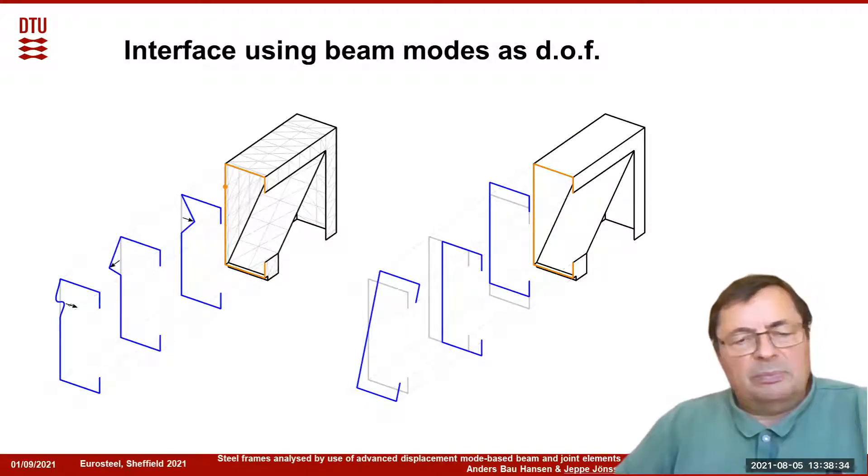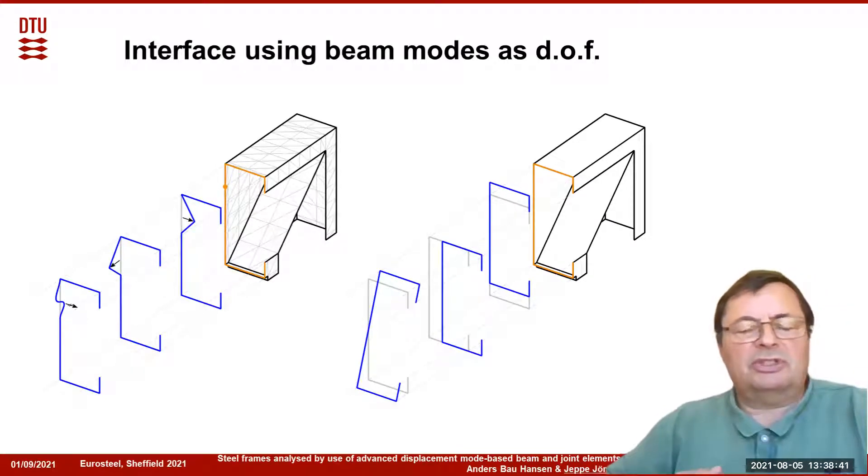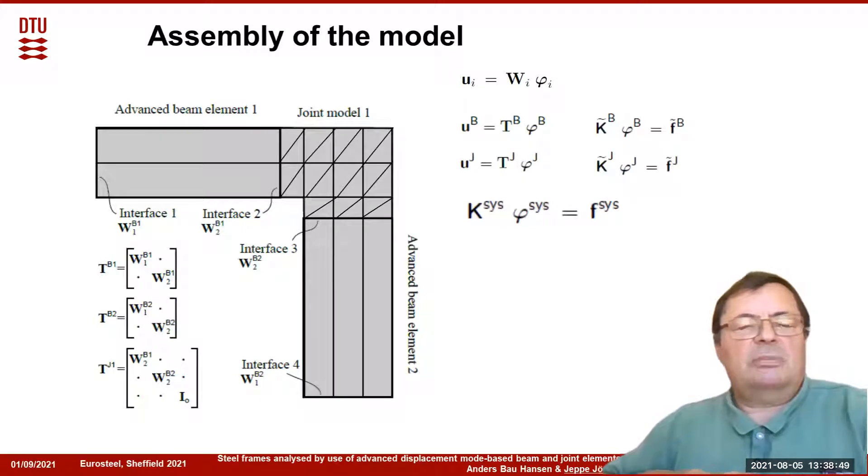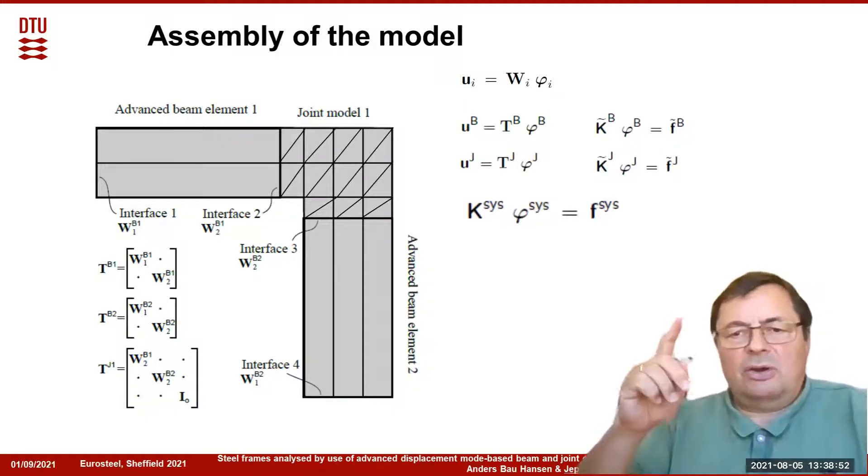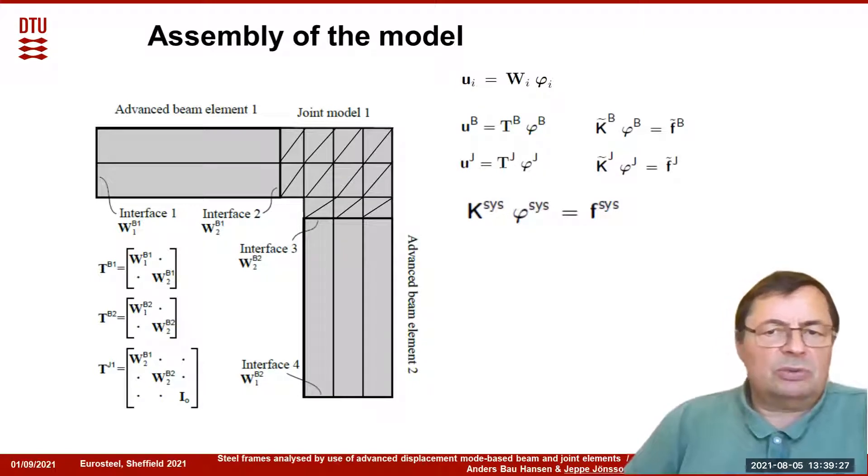Instead of using the conventional degrees of freedom, we would like to use the beam modes as the degrees of freedom. We transform the interface degrees of freedom into modal degrees of freedom. We do that by assembling the equation U equals W multiplied by phi. The W matrix contains the modal shapes of the cross section organized in order, and we can use this as transformation.